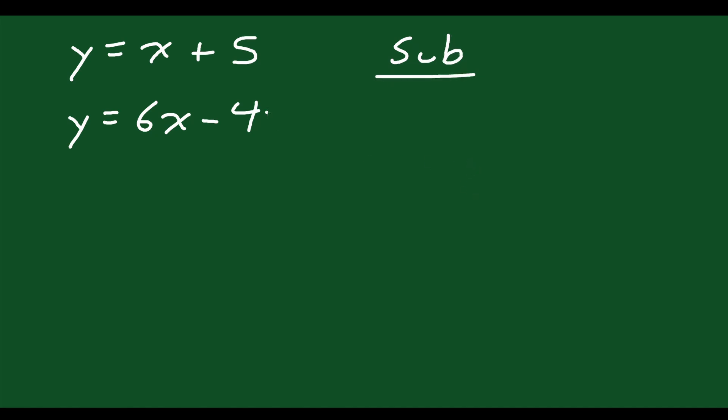So what do we do first? Well, they're both already isolated for y, right? So if y equals this and y equals this and y equals each other at that point where they're crossing, then I can just say this equals this, right? I can say x plus 5 is equal to 6x minus 4. That's substitution, right?